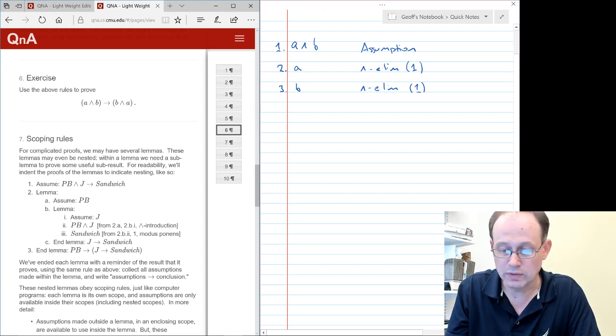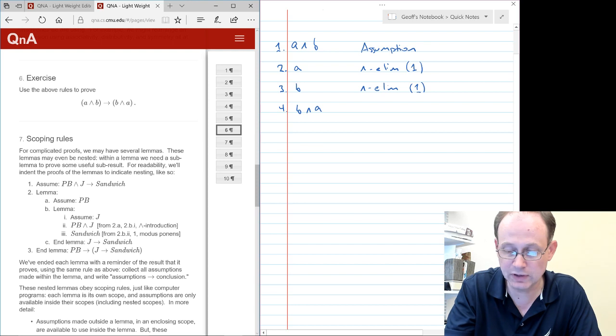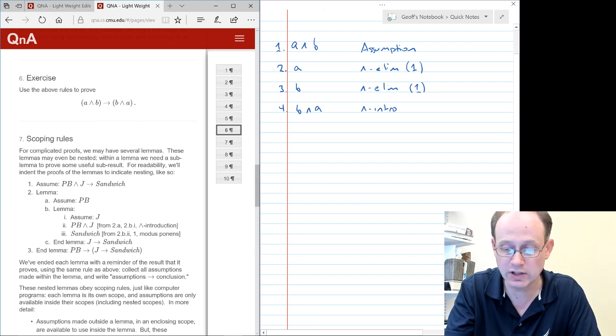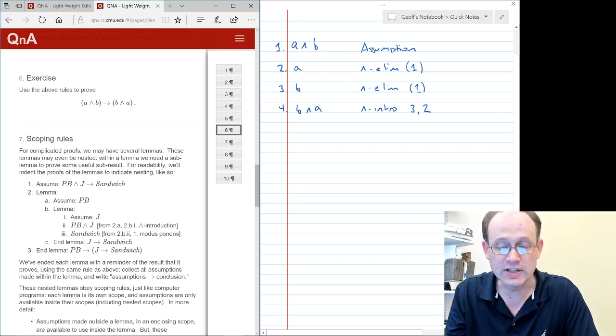All right. And so the next thing we're going to do is prove B and A. And that follows by AND introduction. And the premises for AND introduction are line three and line two in that order. AND introduction takes two premises.